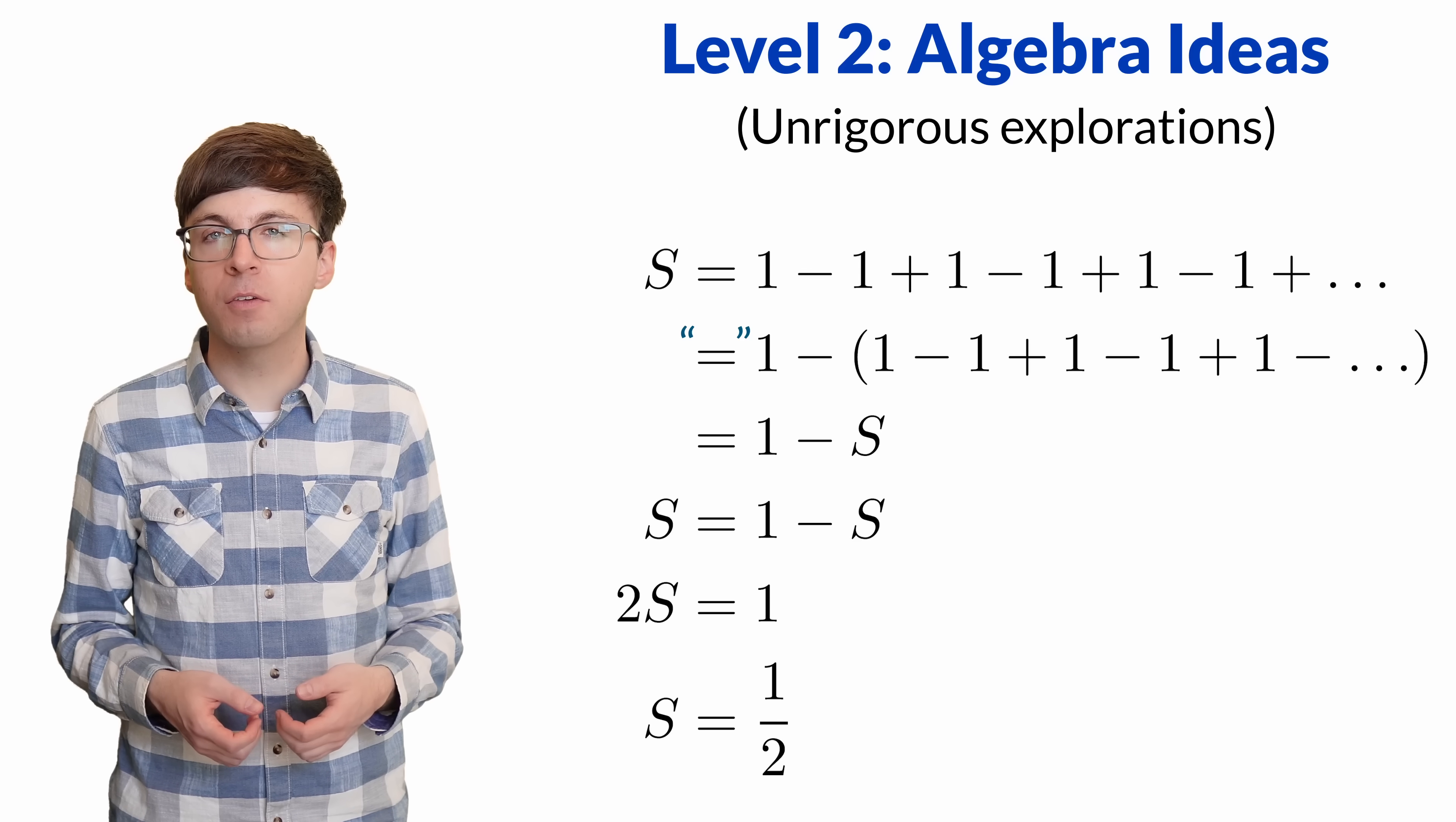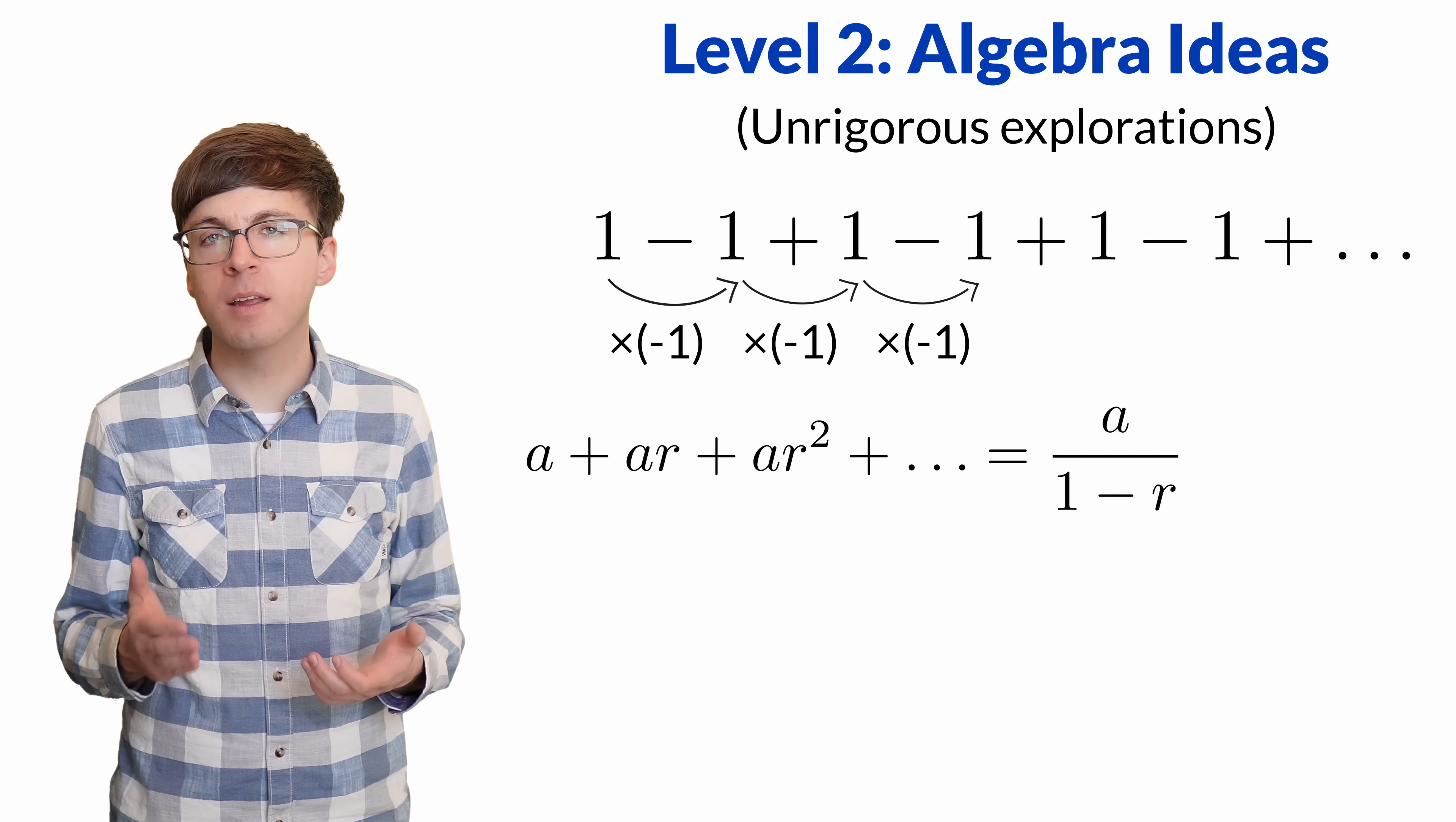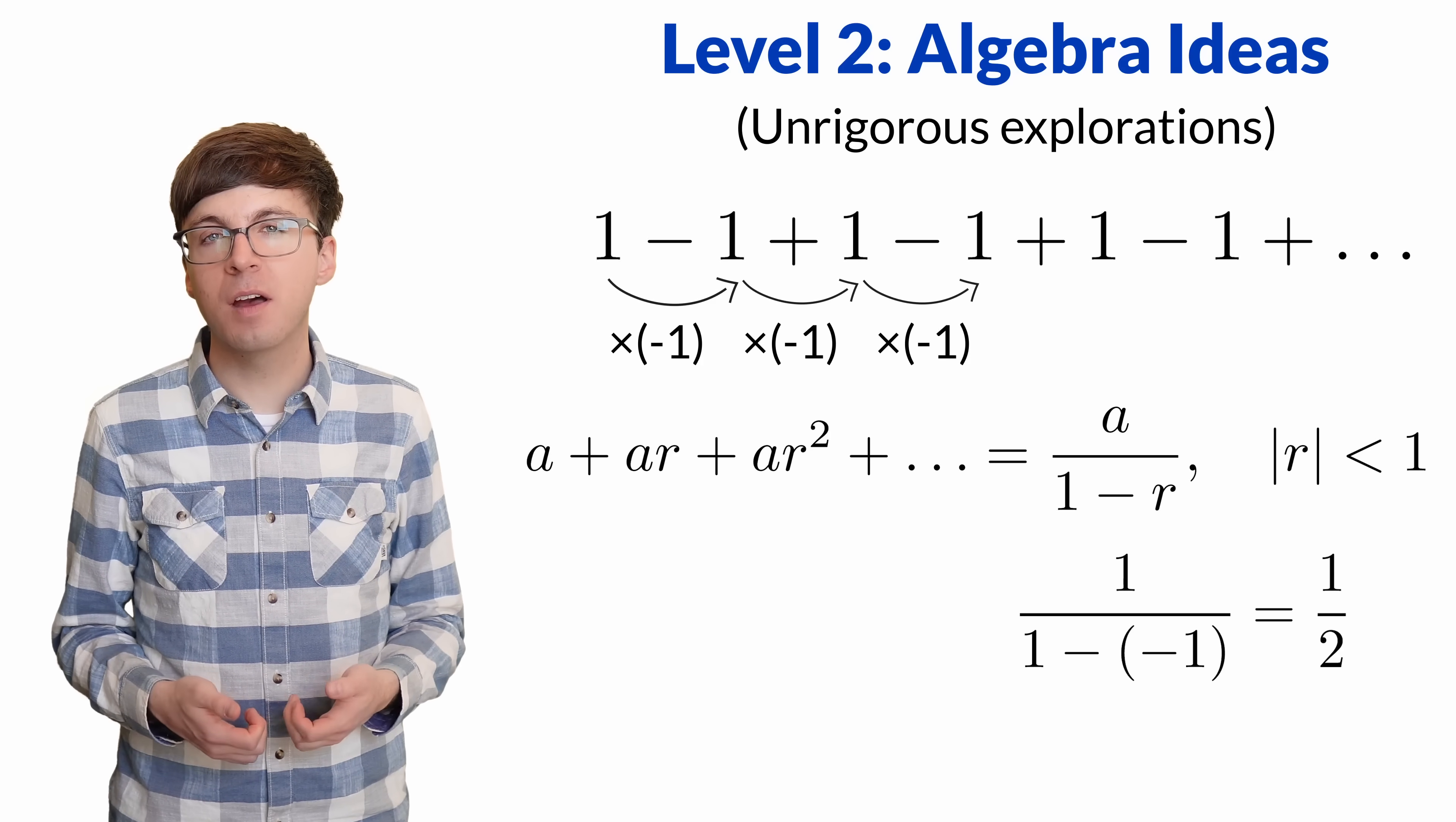We can also get this answer another way. This is a geometric series, since each term is found by multiplying the previous term by negative 1. The geometric series formula tells us that a geometric series equals A over 1 minus R, where A is the first term, and R is the common ratio that we multiply by to get to the next term. This series formula only holds when the absolute value of R is less than 1. In this case, R is negative 1, so the formula doesn't apply. But what if we plug it in anyway? We would get 1 over 1 minus negative 1. The two negatives cancel out, and we get 1 half.